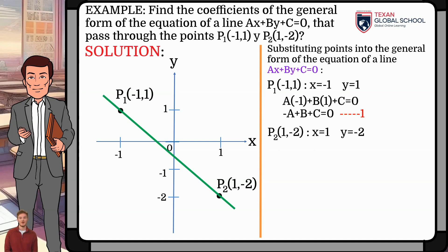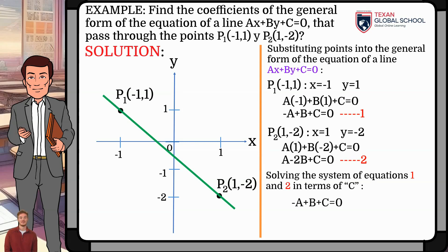Derived from the second point, we have that x is equal to 1 and y is equal to −2. Substituting into the general form of the equation of a line, we obtain a times 1 plus b times (−2) plus c equals zero. So we obtain a second equation: a − 2b + c = 0.